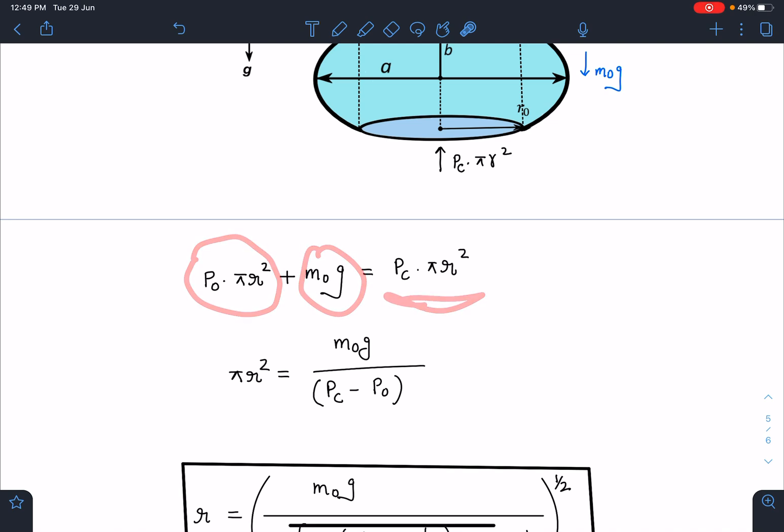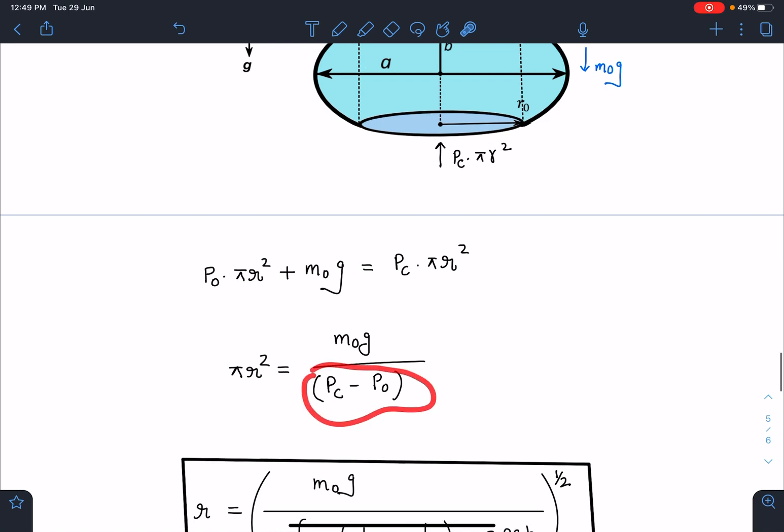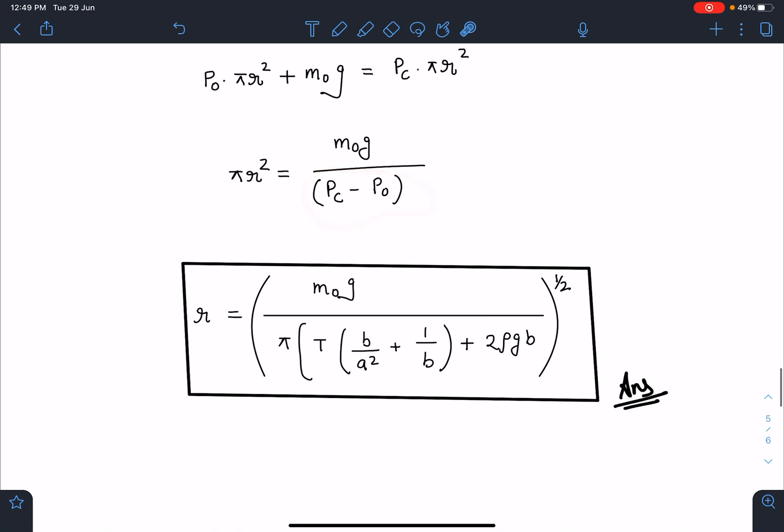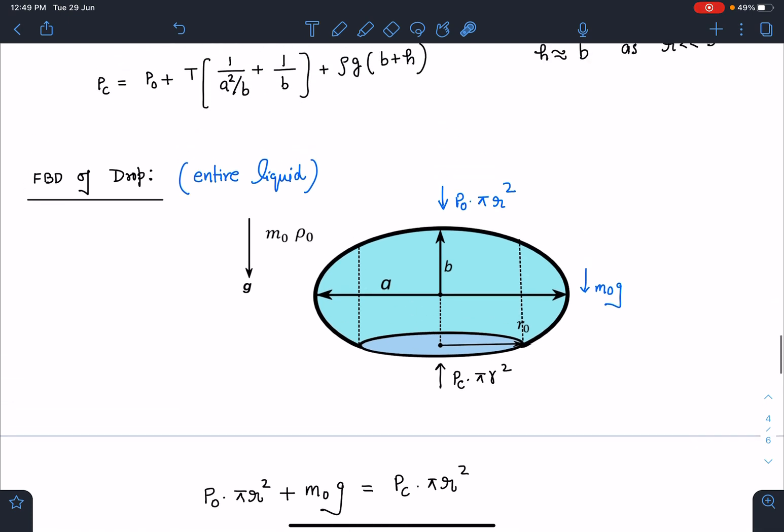Balancing these equations: p₀πr² plus m₀g equals pCπr². When I substitute and solve for r, I get r equals [m₀g divided by π times (T(b/a² + 1/b) + 2ρgb)]^(1/2). This is the final answer for this problem.